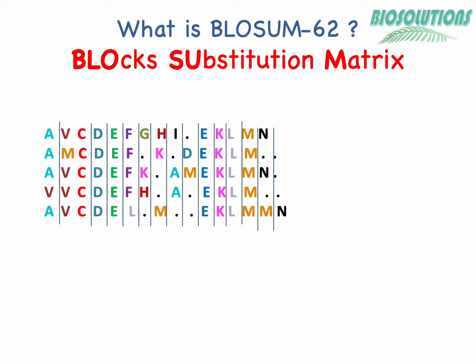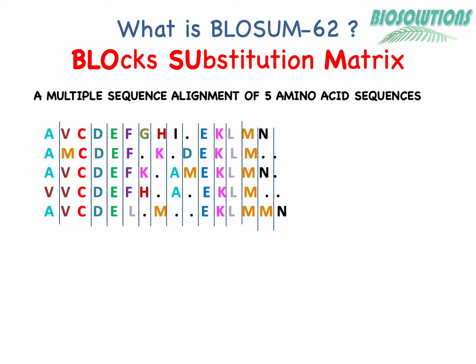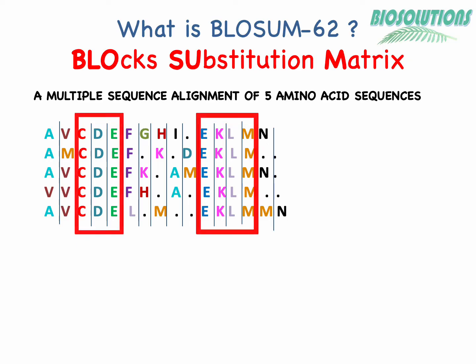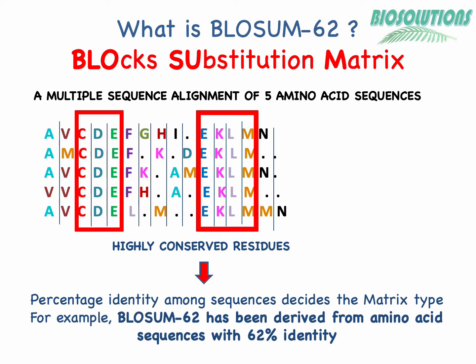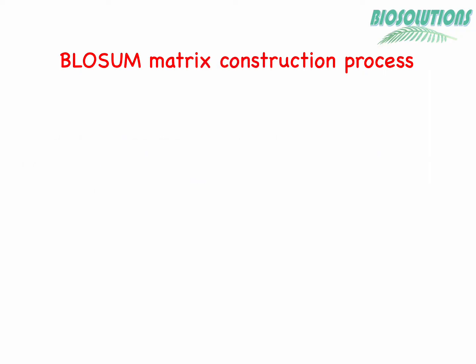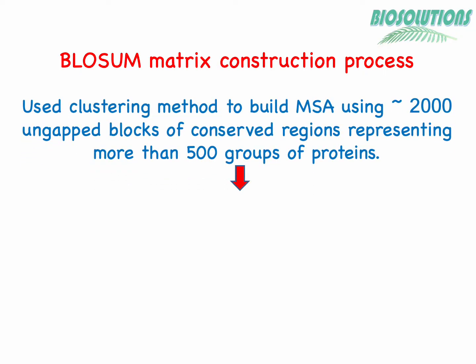BLOSUM was constructed by Henikoff and Henikoff in 1992. They took data from more than 500 groups of proteins from the Blocks database of protein families and used around 2000 ungapped blocks of conserved regions for their calculations. The first step was to create a multiple sequence alignment, or MSA, of conserved sequences using a clustering method. Each cluster was treated as an average sequence.